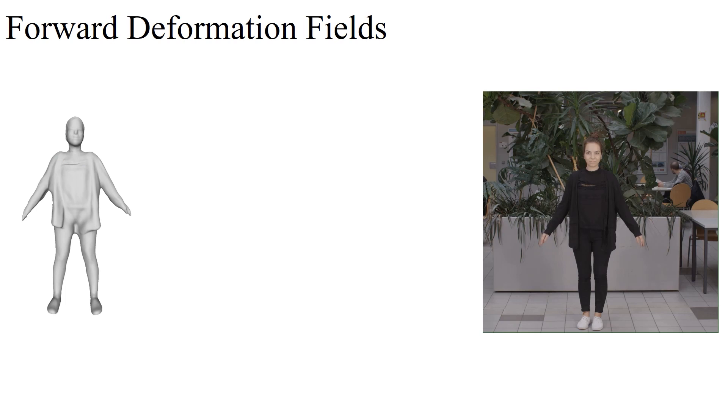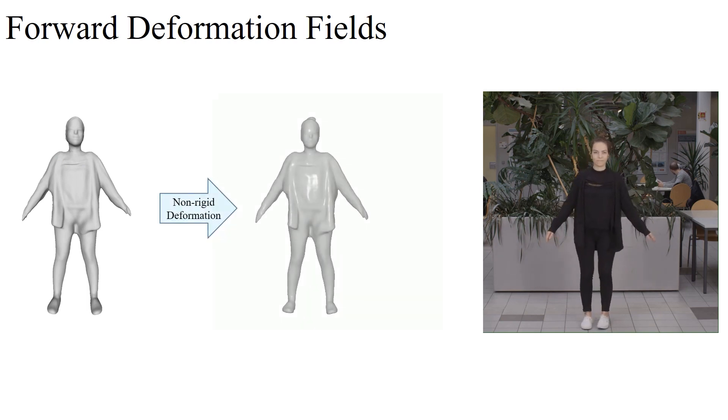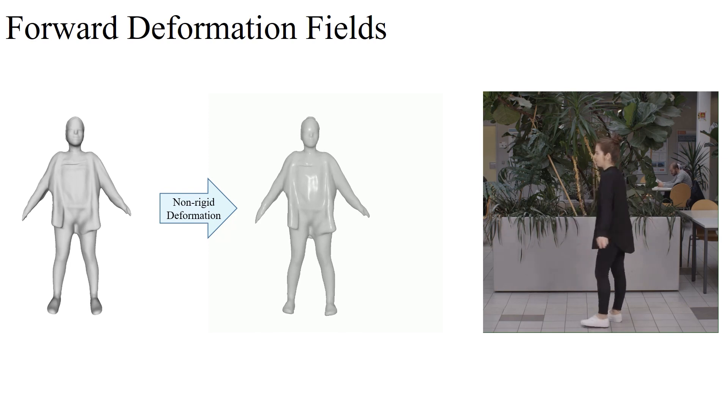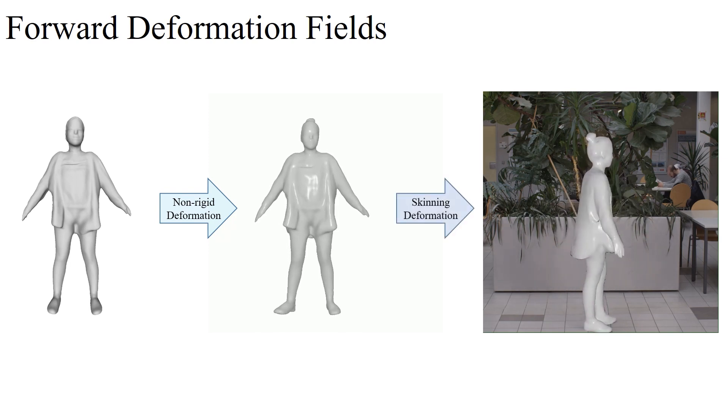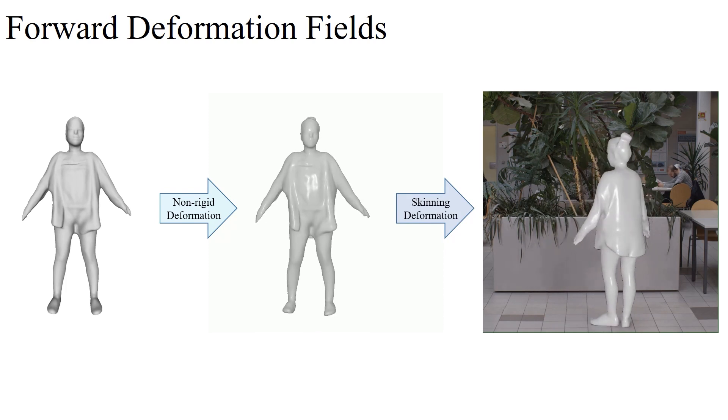For a sequence, our forward deformation composes of two parts to represent the deformation of the current frame. The first one adds non-rigid deformation to the canonical geometry, which mainly models the movement of loose garments. The second one utilizes pre-computed skinning weights field and per-frame articulated pose to express the human motion.